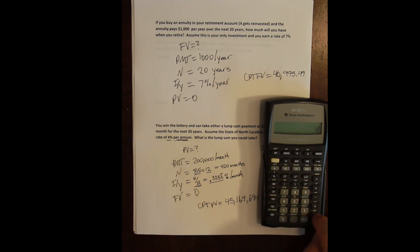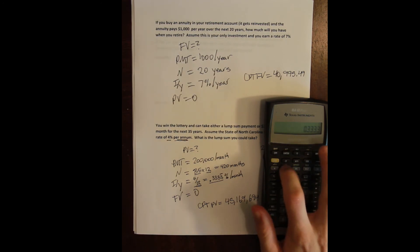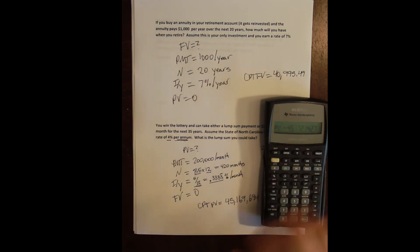35 times 12, 420 months. If I put 0.3333 as my IY and compute my present value, I get a pretty significant difference here, $45,172,142.